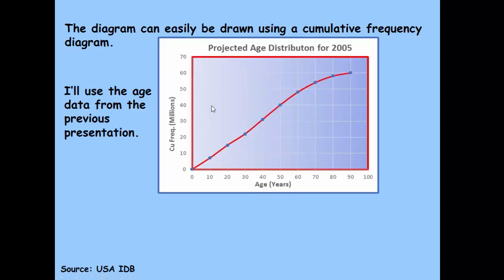If we look back to what we did in the last video, we can see here our projected age distribution for the UK for 2005. Cumulative frequency on the vertical scale, age on the horizontal scale. Remember we went up to 90 and we went up to 60 million, so the cumulative frequency ends at 60 million.